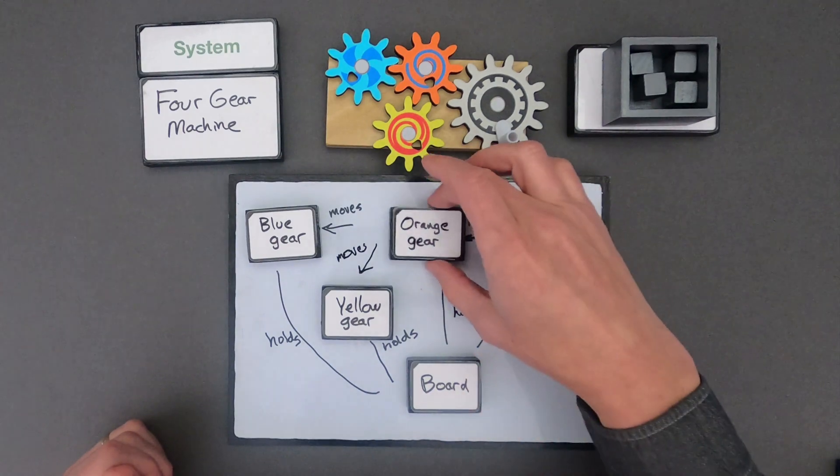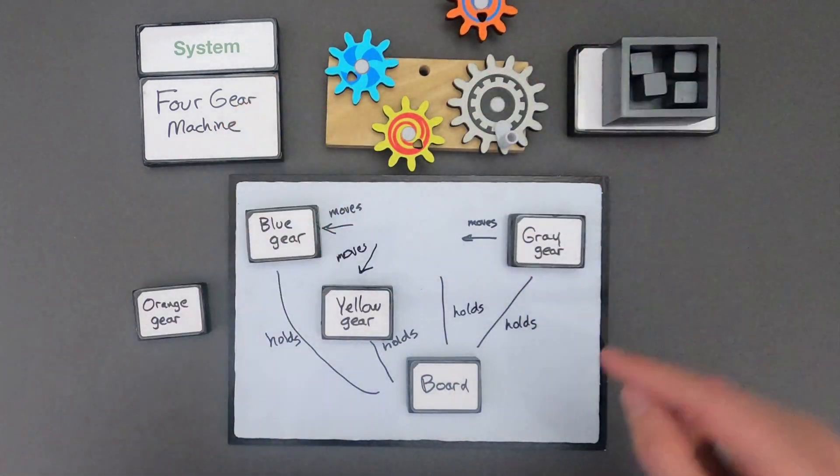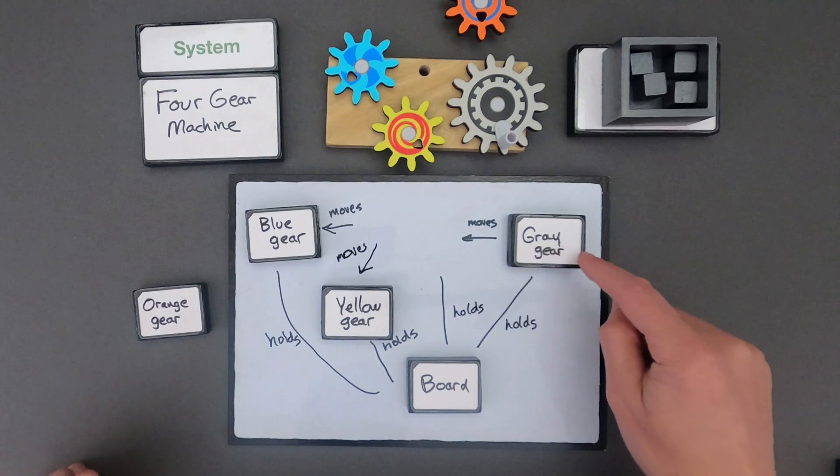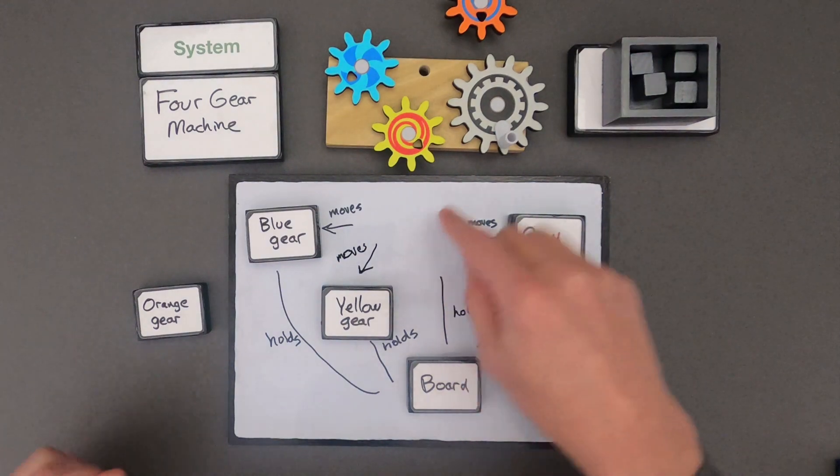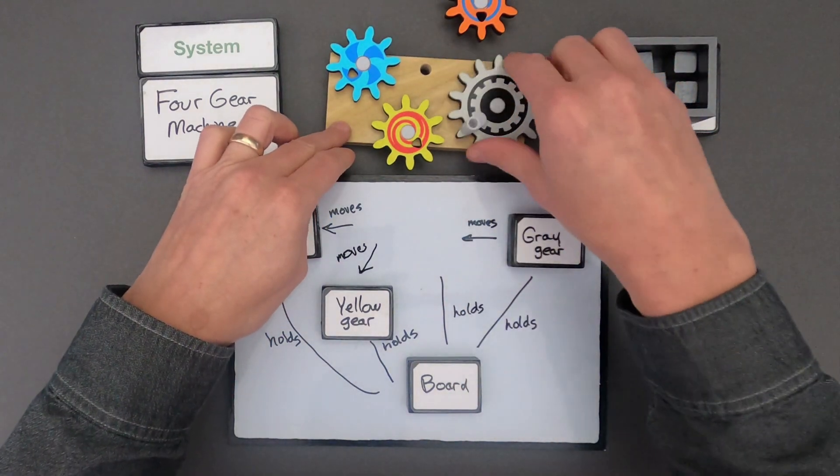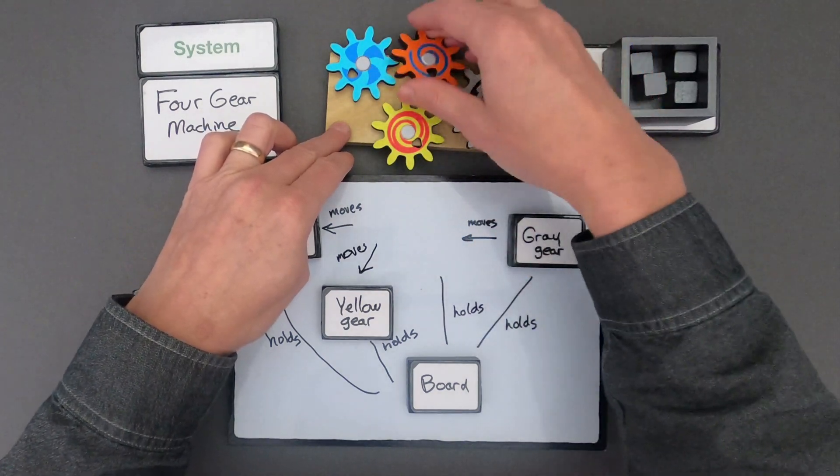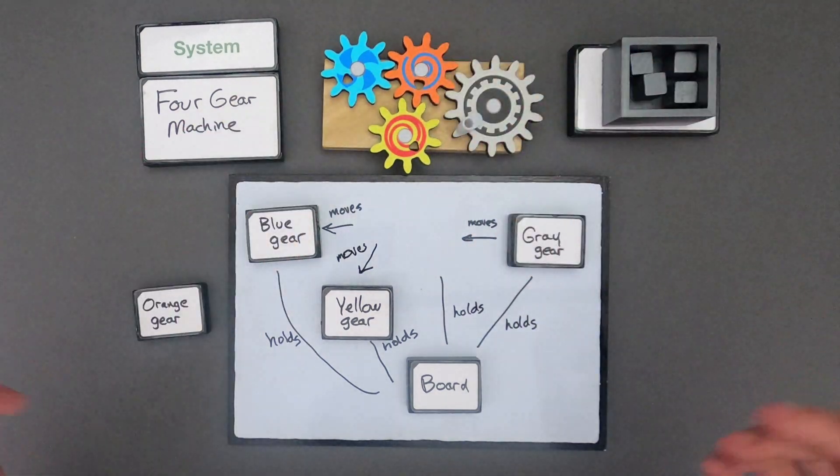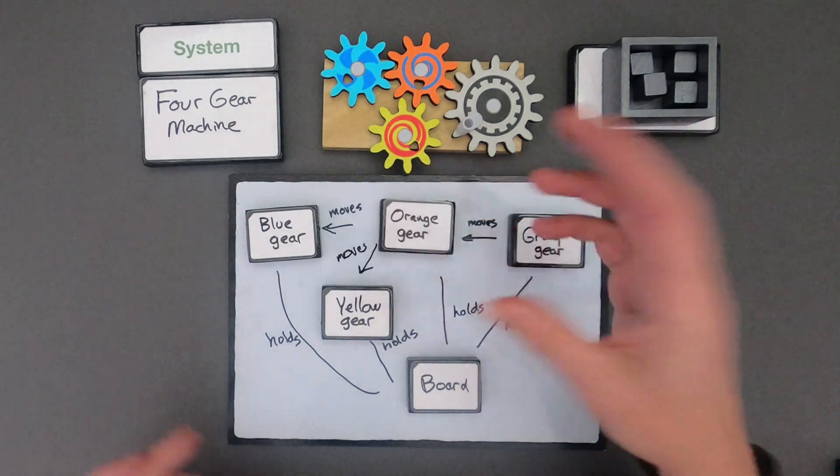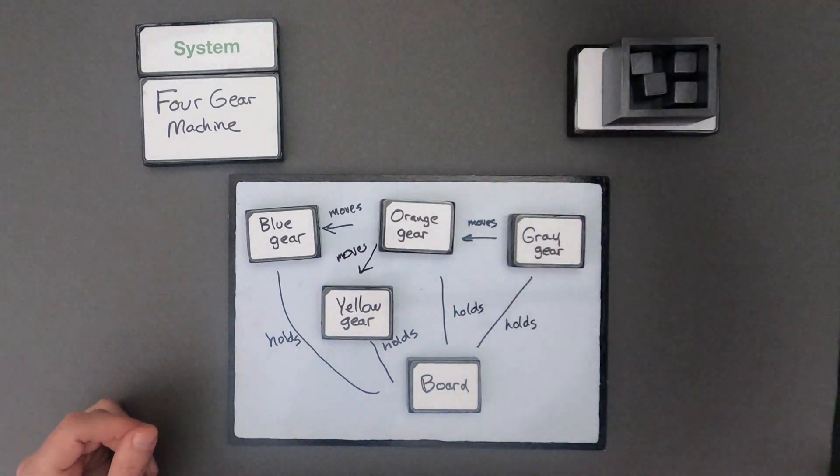And I could test it. If I remove the orange gear, so on my model here, then the gray gear can't move the orange gear. And so when I move the gray gear, you can see that I'm not moving the blue gear or the yellow gear. So that's system thinking around a simple four-gear machine. Let me move this out of the way.